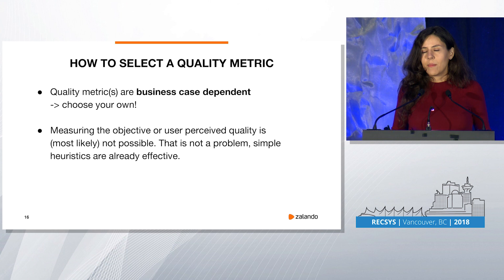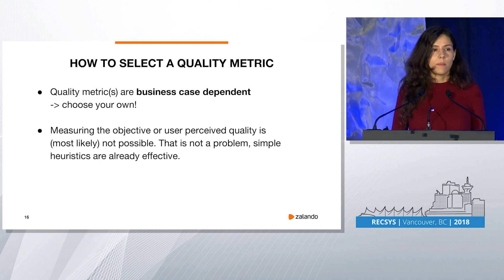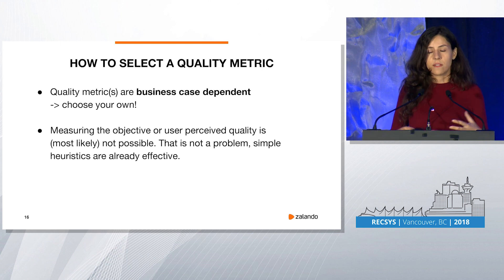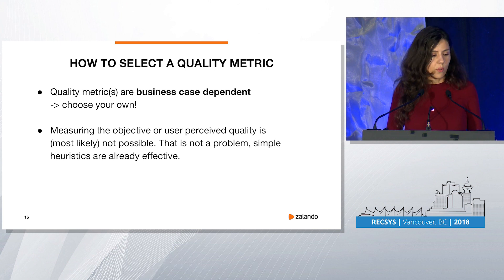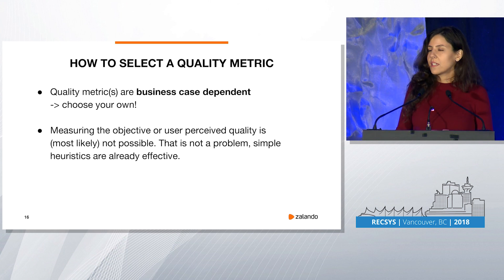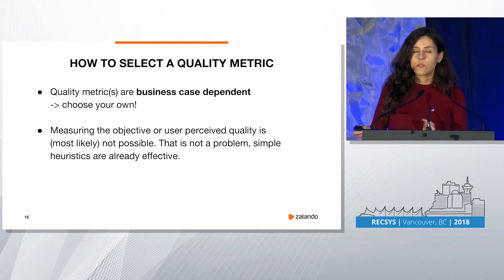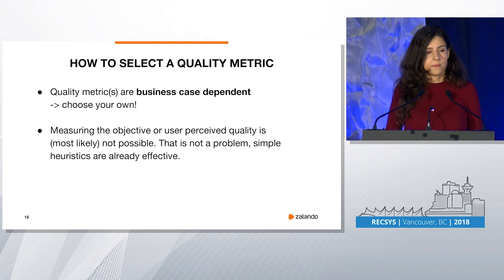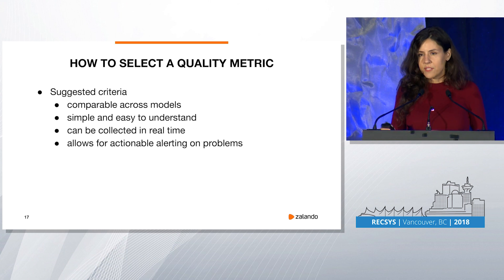How can you come up with such metrics for your business case? It really depends on your case. Maybe you have advanced capabilities and your model has confidence scores, so you might be able to pick a metric that is more specific than what I just introduced. But it really depends — you have to choose your own. Most likely you're not going to be able to capture the objective quality or the one that the user perceives. But the good news is that if you go for a heuristic that comes a bit closer than what we currently have, it's already a really useful tool. I have some criteria I suggest on how to pick a quality metric to monitor.